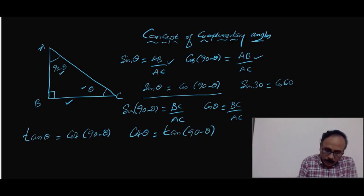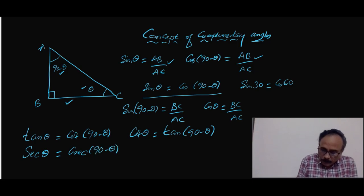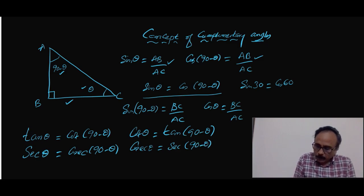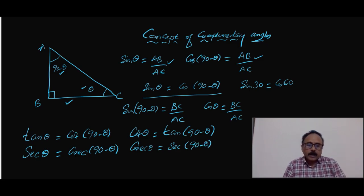Similarly in the pair of secant and cosecant: sec θ is cosec(90 minus θ), and cosec θ is sec(90 minus θ). So secant and cosecant are complementary, tan θ and cot θ are complementary, and sin θ and cos θ — the complementary of sine is known as cosine — are complementary.